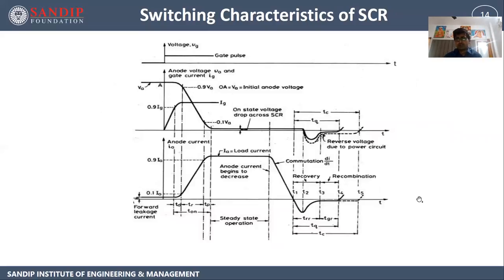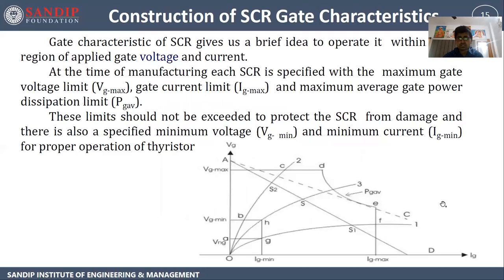Switching characteristics, also called dynamic characteristics, are plotted with respect to time. Once we apply gate voltage, gate current IG starts flowing. Initially the anode to cathode voltage is high. Once the device conducts due to gate current, the voltage drop between anode and cathode starts reducing. Once triggered, anode current starts flowing and after some time becomes constant. This is the switching characteristic of SCR.